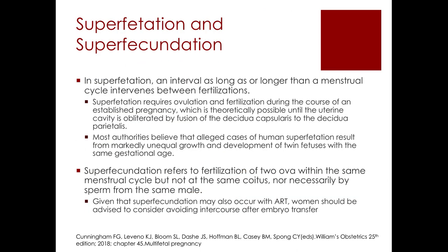Superfetation happens when an interval as long as or longer than a menstrual cycle intervenes between fertilizations. It requires ovulation and fertilization during an established pregnancy, which is theoretically possible until the uterine cavity is obliterated by fusion of the decidua capsularis to the decidua parietalis. Most authorities believe alleged cases of human superfetation result from markedly unequal growth of twin fetuses with the same gestational age.